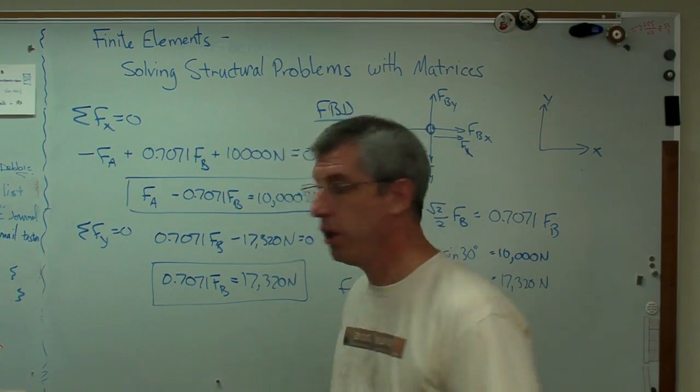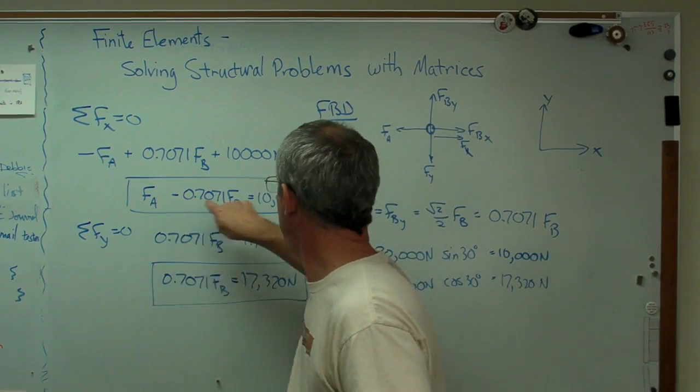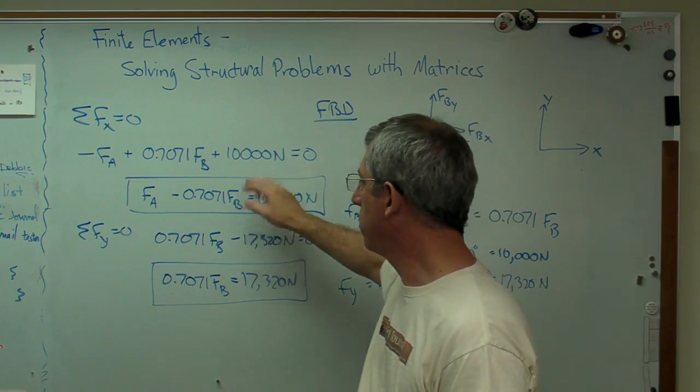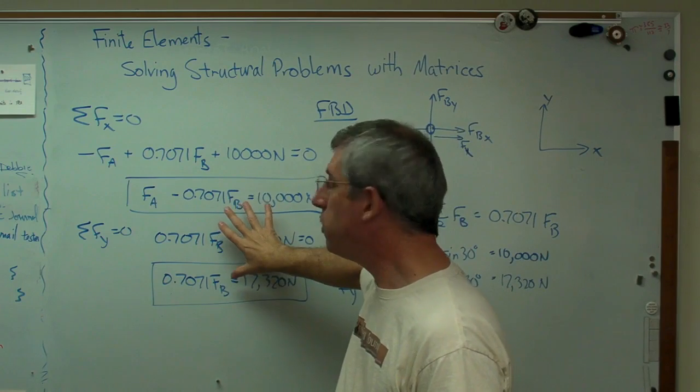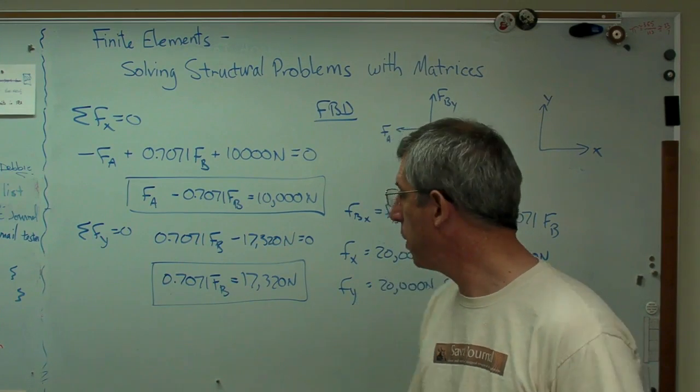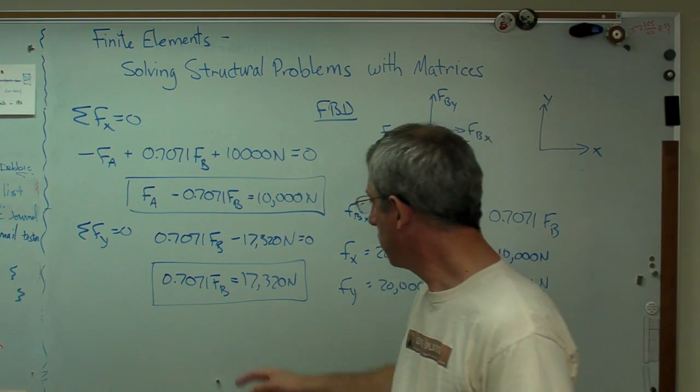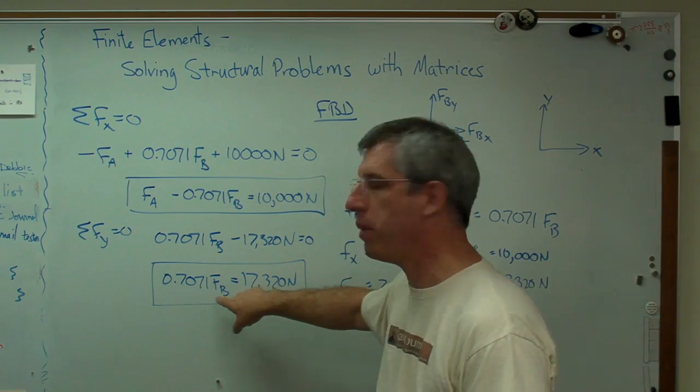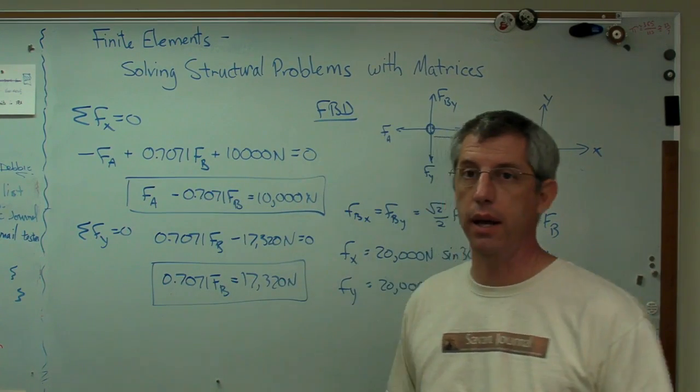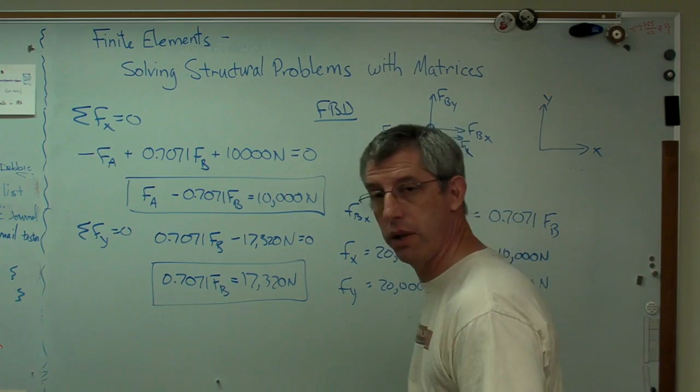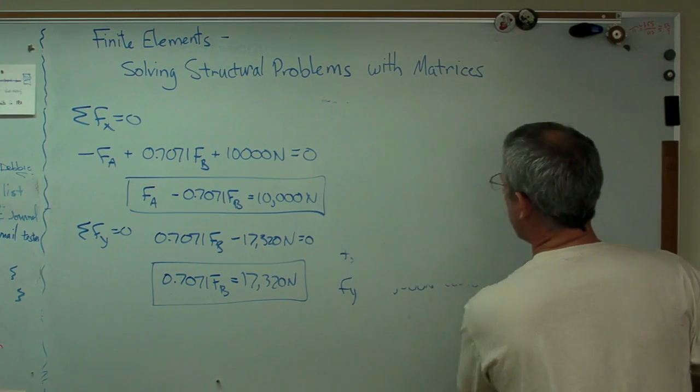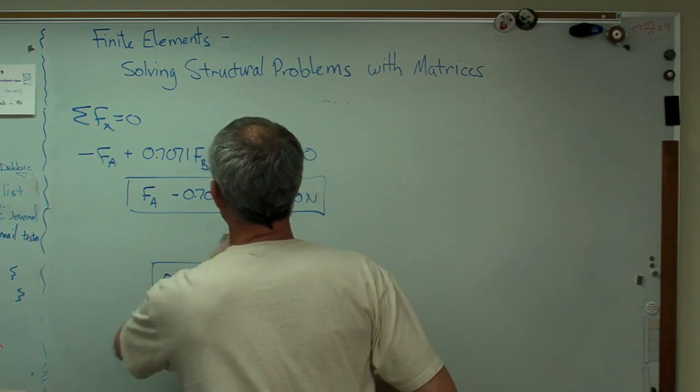Two equations. One, two. Two unknowns. FA, FB. As long as these two equations aren't the same, and they're not, or they aren't multiples of each other, and they're not. So as long as these are two separate equations, if I've got two equations and two unknowns, I'm in business. I can solve this problem. Now, the way you'd normally do it, certainly the way I would do it, well, there's one equation and one unknown there. I just divide through by 0.7071, and I'd know what FB was. And then I'd back substitute in there and find FA. That's perfectly fine. There's nothing wrong with that. You'll get the right answer. Another way to do it, though, it turns out a more general way.